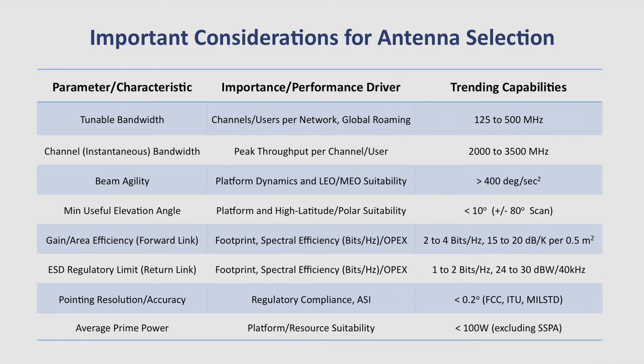The other really important factor is channel bandwidth — the maximum bandwidth any one plane can use, the transponder size. That used to be 36 MHz, which is an important metric because it can limit your throughput to the plane. That's now moving to 72 MHz, 125, 250, 500 MHz — particularly as we go to HTS satellites — and not all antennas can handle that much bandwidth. A third consideration is beam agility. On a commercial plane cruising with a fixed GEO satellite, you don't need a whole lot of agility.